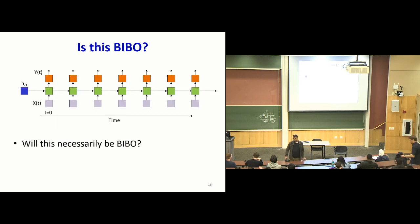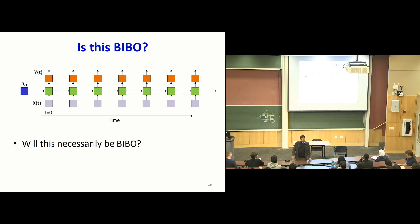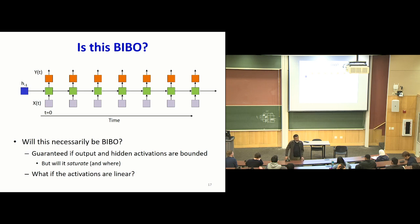Now let's look at recurrent structures. Is this going to be BIBO? The conditions under which the output never explodes: if the input and hidden activations are bounded, the output can't explode. But what we're more concerned with is whether things will saturate and give meaningless results. So our notion of BIBO stability here really means a system whose output carries information about the input and doesn't just saturate. Let's look at the situation where the activations are linear, because linear systems are simple to analyze, and we'll extrapolate to non-linear systems subsequently.